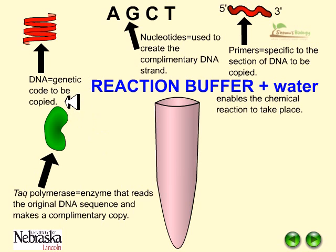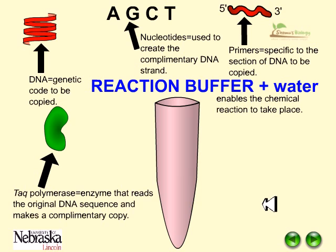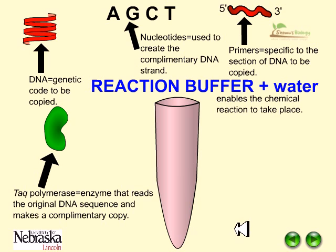DNA is the genetic code to be copied. Nucleotides are used to create the complementary DNA strand, and primers are specific to the section of DNA to be copied. The reaction buffer and water enable the chemical reactions to take place. Taq polymerase is the enzyme that reads the original DNA sequence and makes a recombinant or complementary copy.